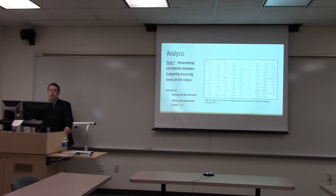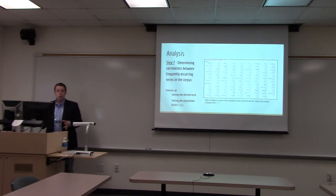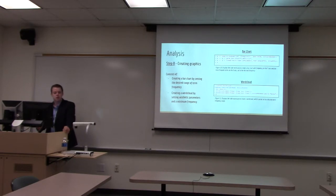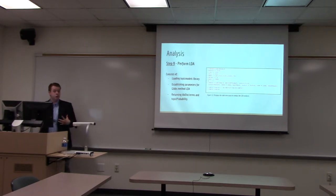Step seven is determining the correlation between the most frequent words and the words used in association with them. For example, we have the term 'hemp' with an association factor of 0.95 — meaning 95% of the time or higher, these words are what show up in association with hemp. This is where we are able to make our assumptions regarding the text. Step eight is creating the graphics — a bar chart for statistical representation and a word cloud, which does not bear statistical weight. The last step, the all-encompassing step, is the LDA, which sets parameters and looks at which words and topics are most frequently discussed in each corpus.